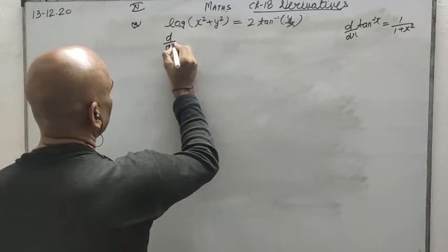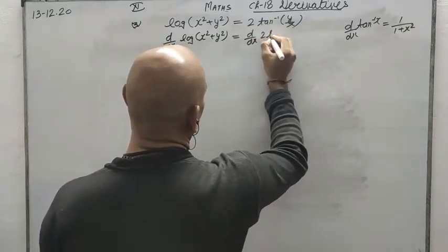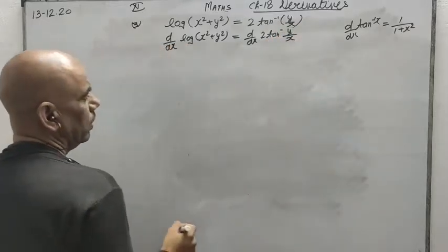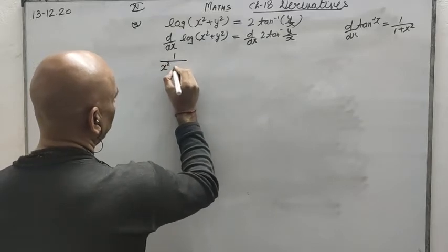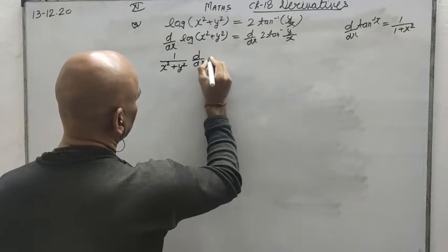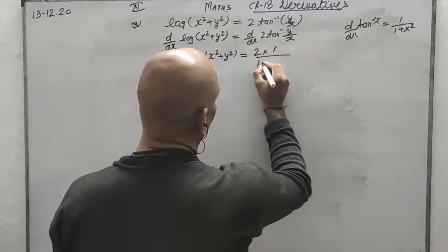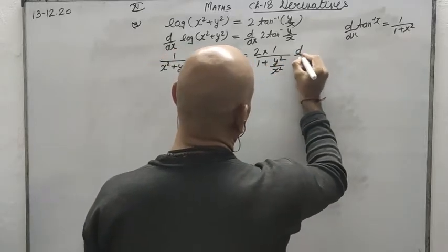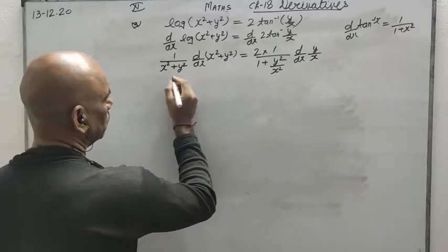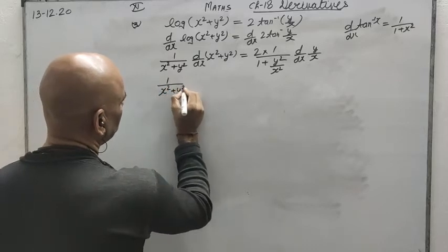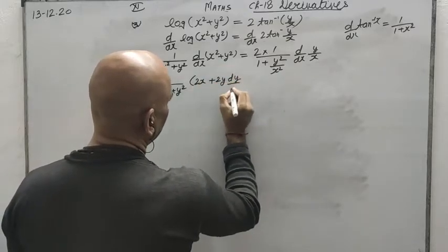We differentiate both sides: d over dx of log(x squared plus y squared) equals d over dx of 2 tan inverse (y upon x). Applying the log differential — log x differentiates as 1 upon x — this becomes 1 upon (x squared plus y squared) times d over dx of (x squared plus y squared). On the right, it is 2 times 1 upon (1 plus y squared upon x squared) times d over dx of (y upon x). The differential of x squared is 2x and the differential of y squared is 2y dy by dx.